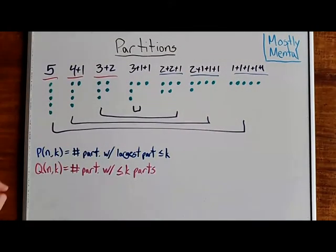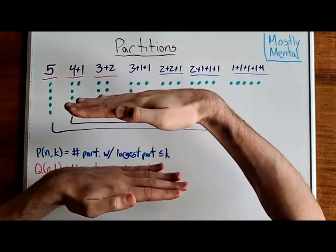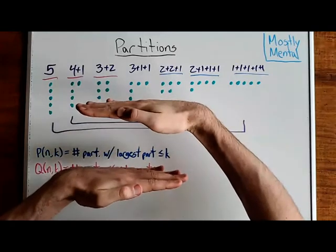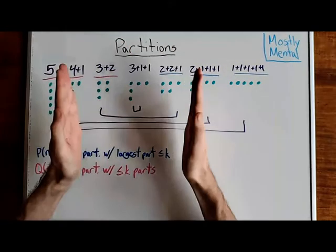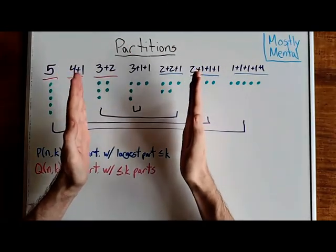Then, p and q are really describing the same thing, just from opposite directions. p is talking about how many partitions there are with a given maximum height, and q is talking about how many there are with a maximum width.